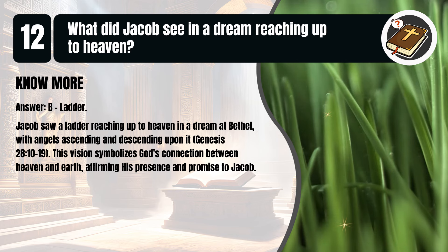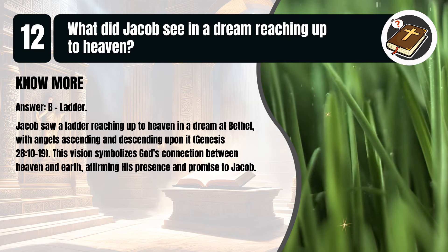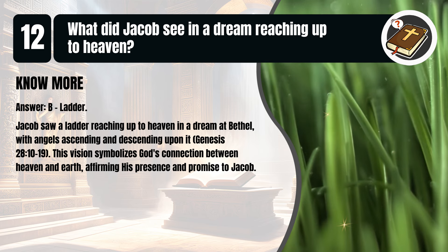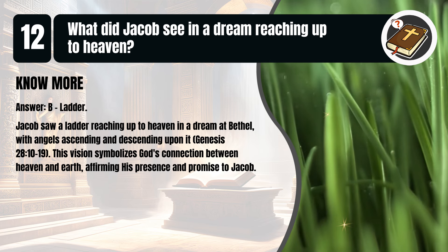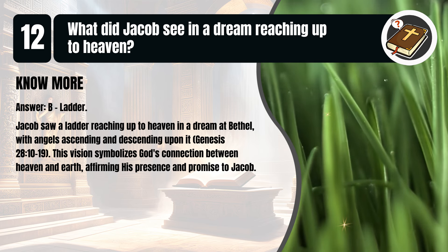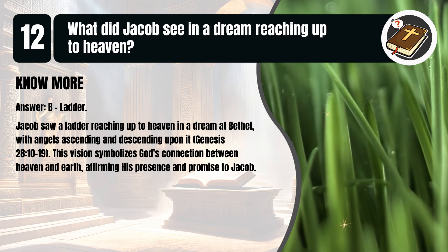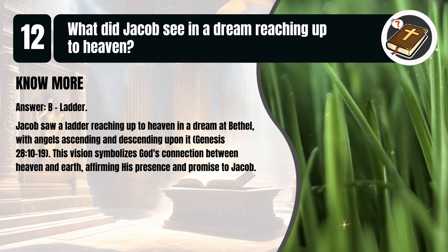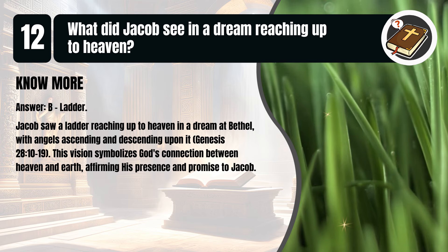That's B. Ladder. Jacob saw a ladder reaching up to heaven in a dream at Bethel, with angels ascending and descending upon it. Genesis, chapter 28, verses 10 to 19. This vision symbolizes God's connection between heaven and earth, affirming his presence and promise to Jacob.